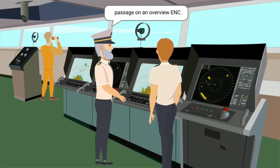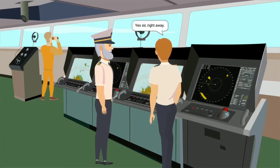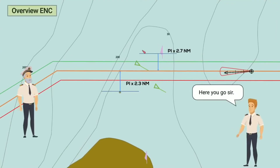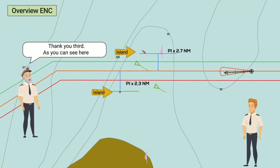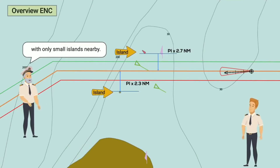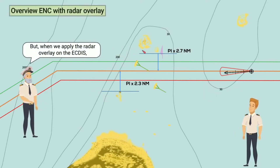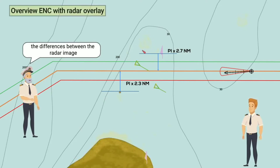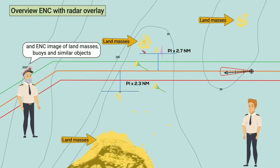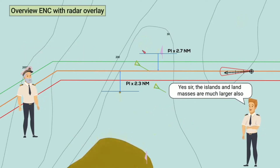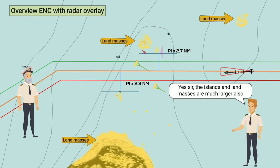Could you simulate our coastal passage on an overview ENC? Yes, sir, right away. Here you go, sir. As you can see here on the overview ENC, the coastal passage is clear with only small islands nearby. But when we apply the radar overlay on the ECTIS, the differences between the radar image and ENC image of land masses, buoys, and similar objects can be easily detected.